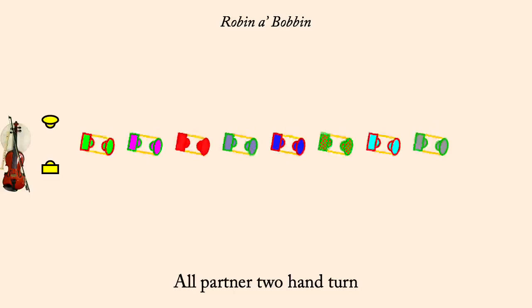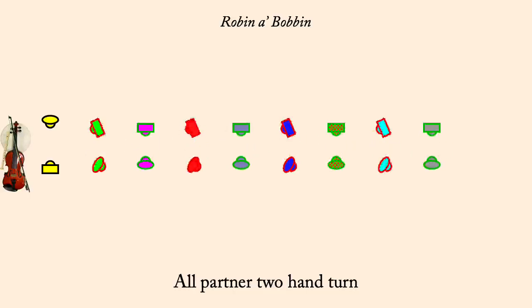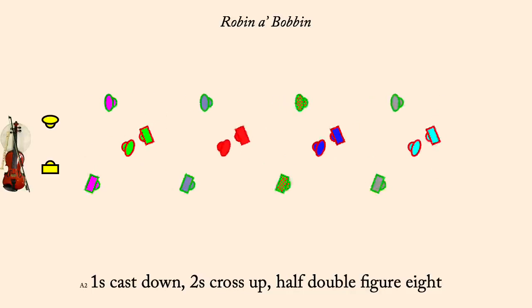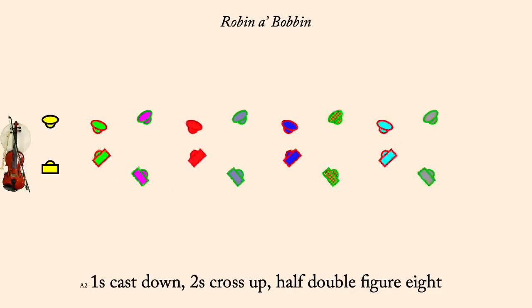Ones cast down, twos cross up, double half figure eight. Partner two-hand turn.